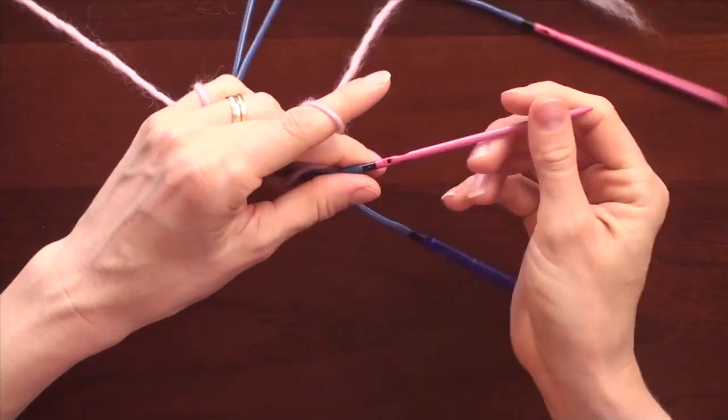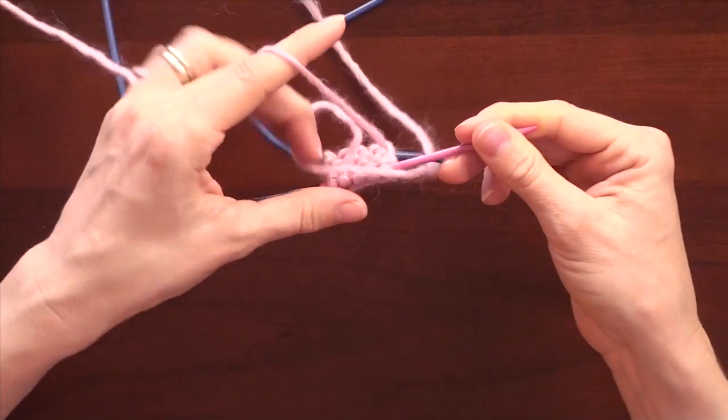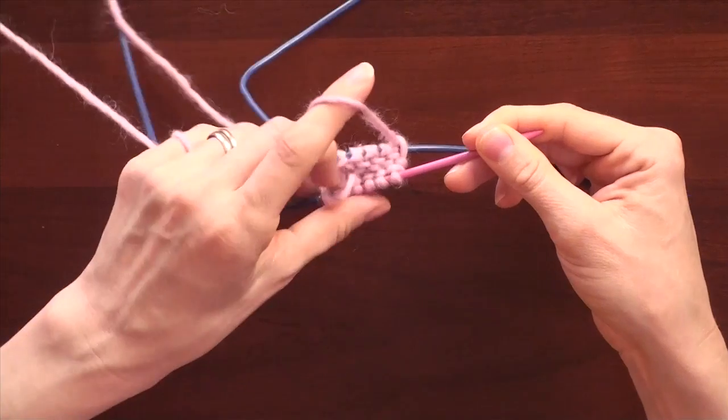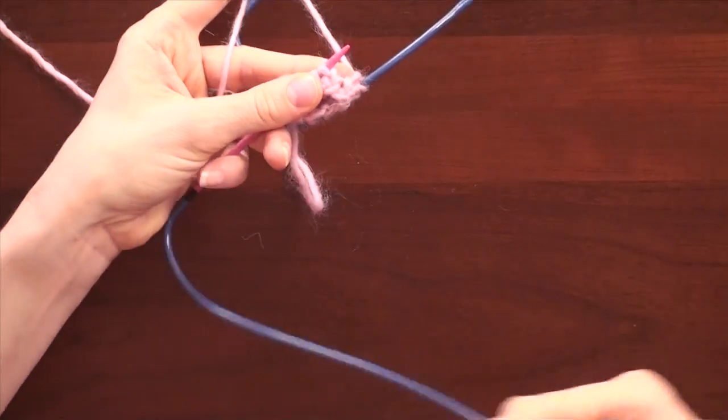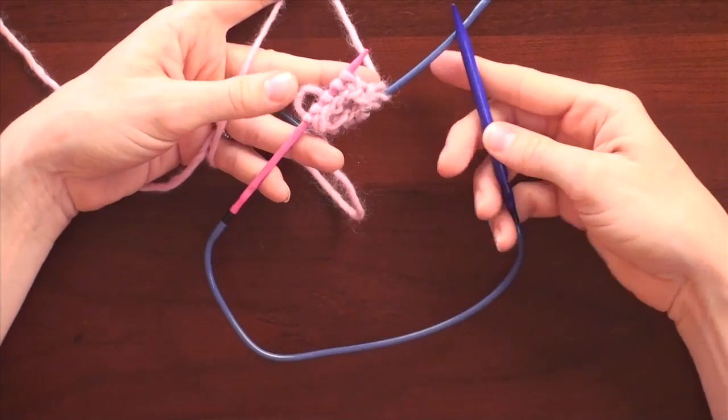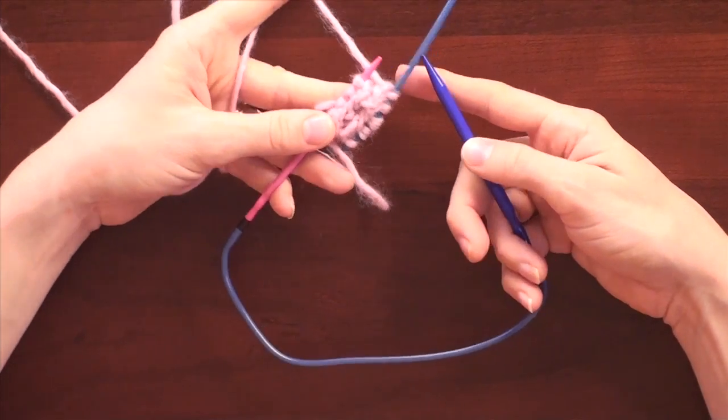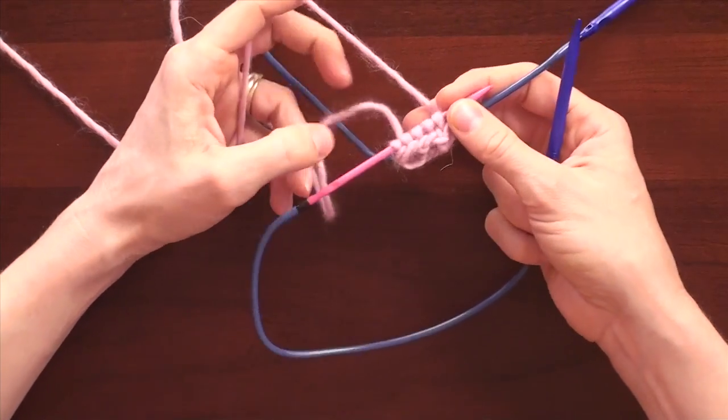Slide, grab the next needle tip, and continue. That's it. Two circular needles doing small diameter circular knitting.